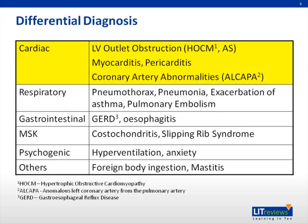Cardiac causes include structural cardiac defects, especially those that obstruct the left ventricular outflow tract, including hypertrophic obstructive cardiomyopathy and aortic stenosis. Acute inflammation of the cardiac muscle, as in myocarditis, or inflammation of the pericardium, as in pericarditis, can cause chest pain. More rarely, abnormal coronary arteries like anomalous left coronary artery from the pulmonary artery, or ALCAPA, is also a cause.